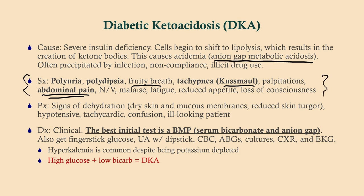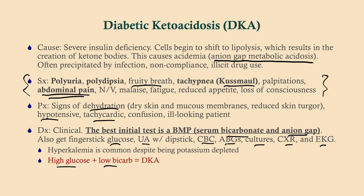On physical exam, they'll naturally be dehydrated and, as a consequence, hypotensive, tachycardic, and in many cases confused. For diagnosis, the best initial test is a BMP — basic metabolic profile — to check electrolytes, specifically the bicarb and the anion gap. You can also get a finger-stick glucose, urinalysis, CBC, arterial blood gases, cultures, chest x-ray, and EKG — but those are secondary. If you've got a patient with high glucose and a low bicarb in the setting of all these symptoms, you've got DKA.